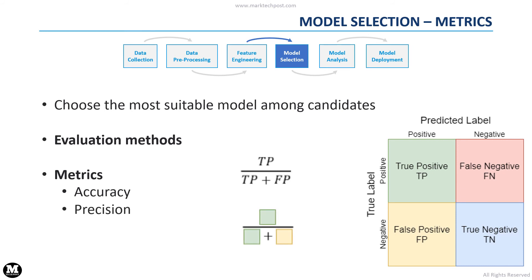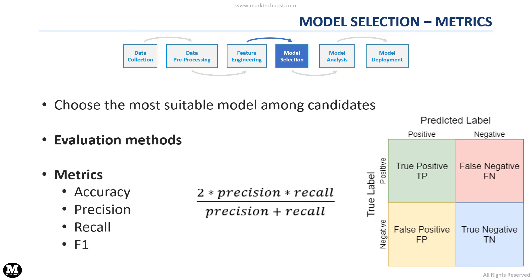Precision is used to understand how many positive predictions are actually positive. This is useful when it is important to have a low number of false positives. For instance, an email spam detector should maximize precision, since we don't want to predict as spam emails that are not spam. Recall is used to find how many times the model missed a true prediction among all positive instances. This is an important metric when we want to minimize false negatives — for example, a disease detector has to minimize the cases in which a patient has a disease but the model did not recognize it. Finally, we can consider the F1 score, which is the harmonic mean of precision and recall, useful to consider the contribution of both measures.